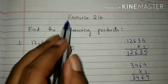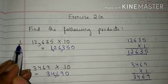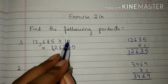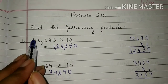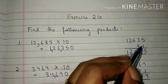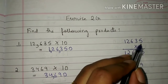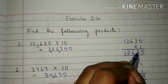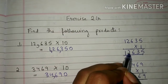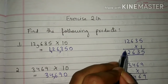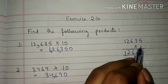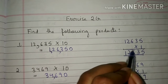Find the following products. First question: 12,635 into 10. Students, first we will multiply 12,635 by 1. So 1 into 5 is 5. 1 into 3 is 3. 1 into 6 is 6. 1 into 2 is 2. 1 into 1 is 1. So 12,635 multiplied by 1 will give 12,635.